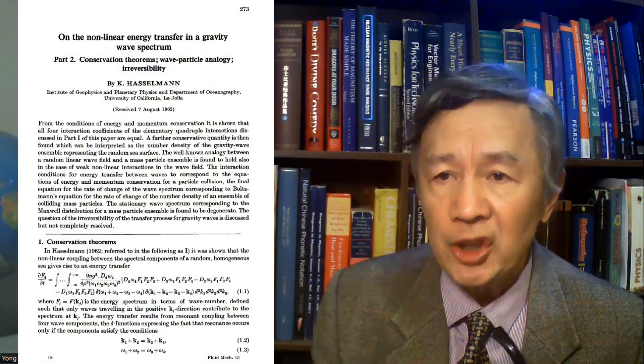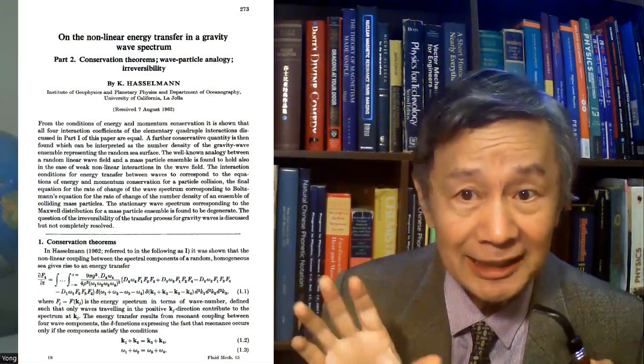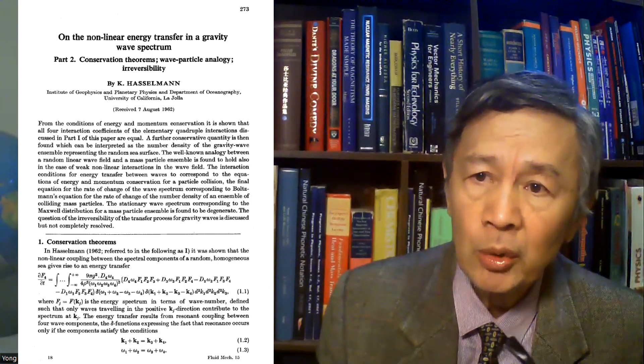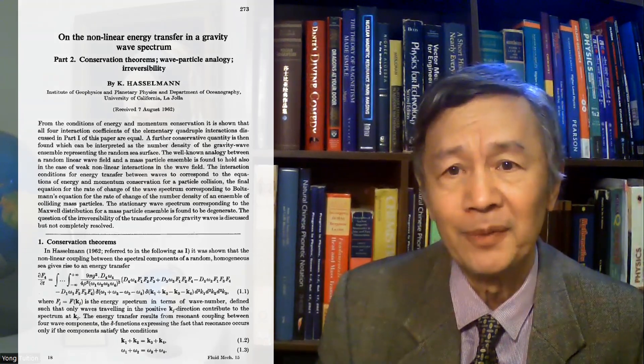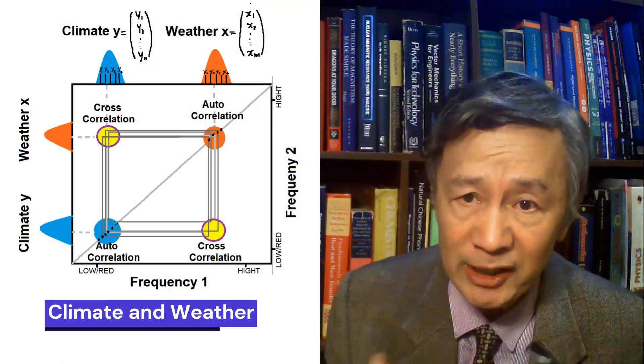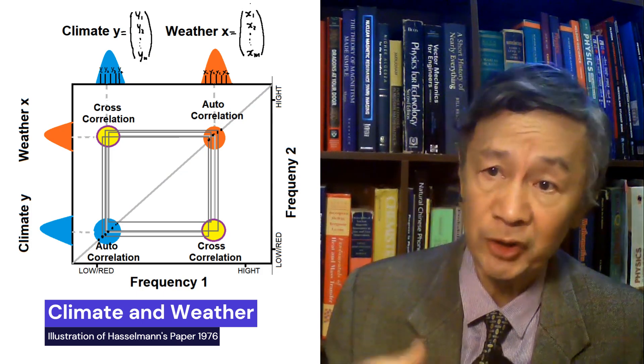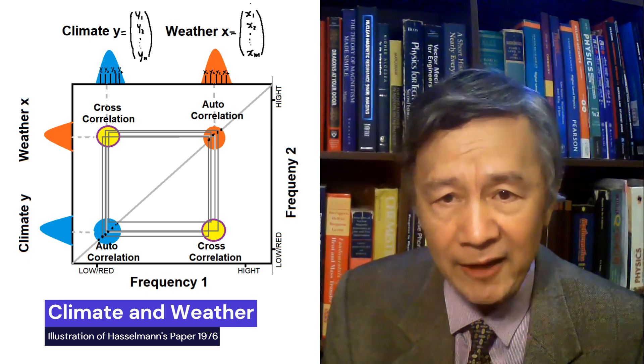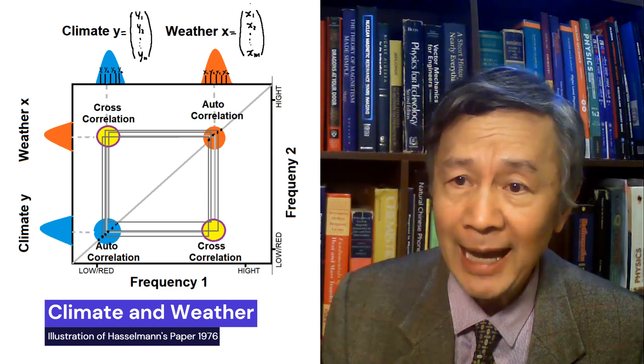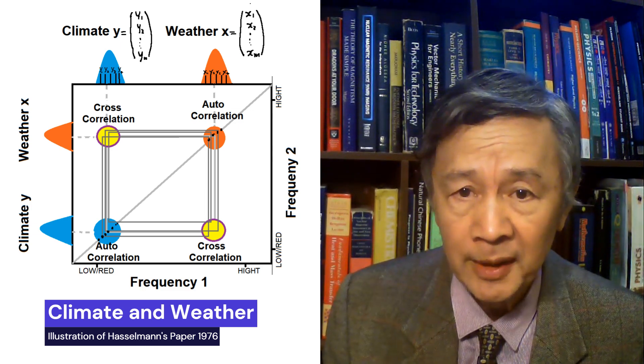Remember, as I mentioned before, Hasselmann had studied ocean waves for many years before he became a climate activist. As early as 1962, he reported that certain resonant coupling between random ocean waves could make non-linear energy transfer, which is visible in the Fourier-transformed spectrum. I think that was why he came up with the assumption that two distinct peaks exist in the Fourier-transformed spectrum of the time series of stochastic weather changes — high-frequency noise associated with weather, and low-frequency or red signals associated with climate.